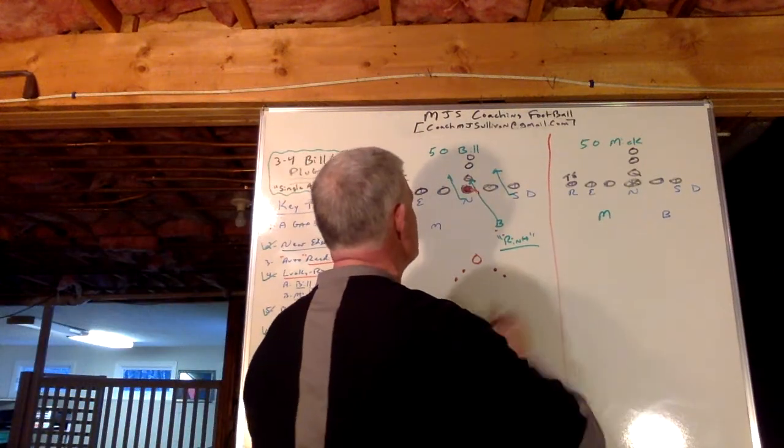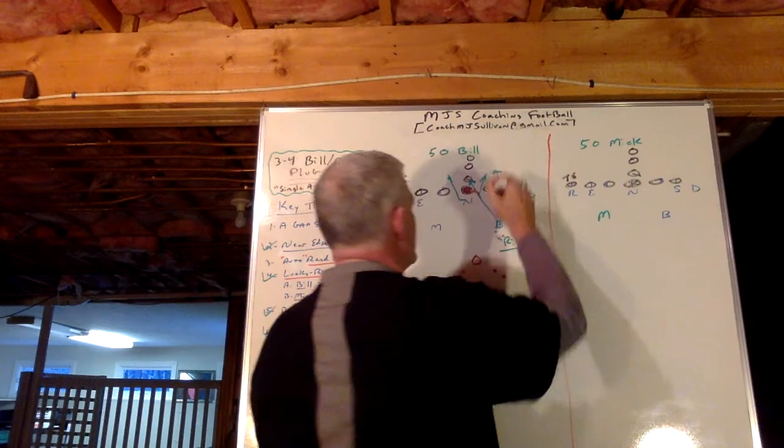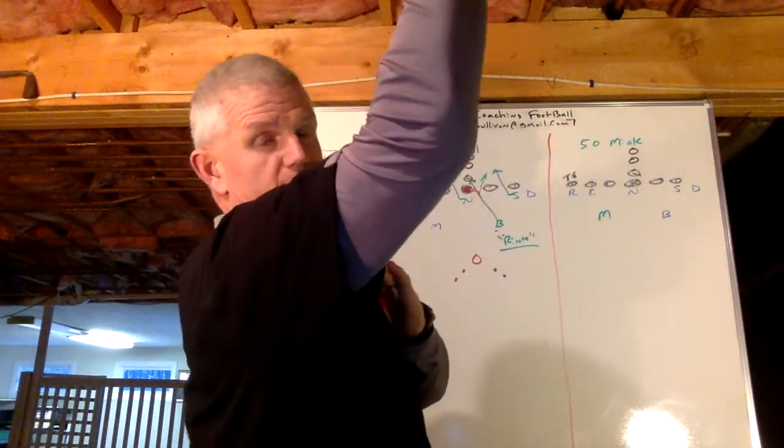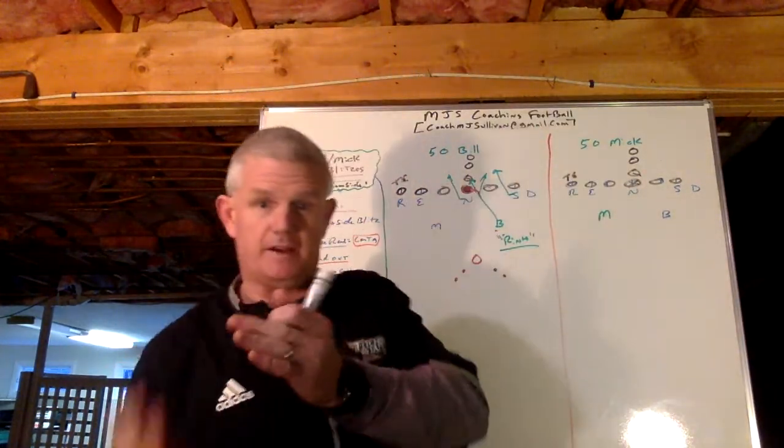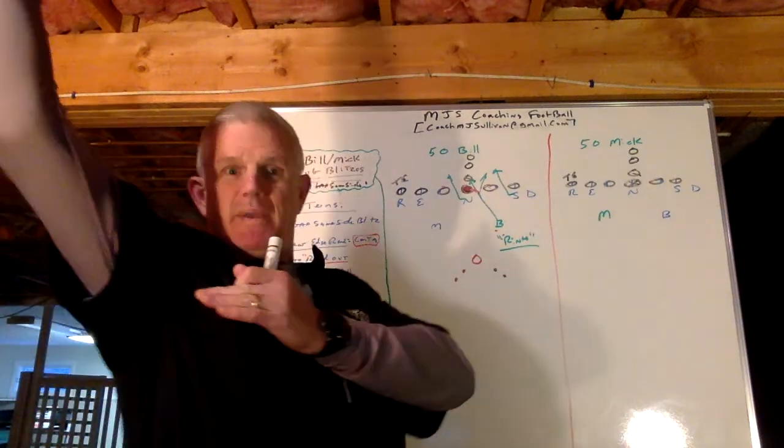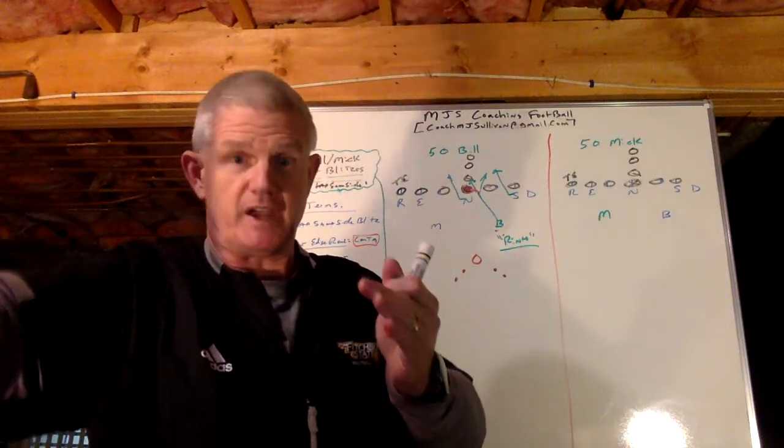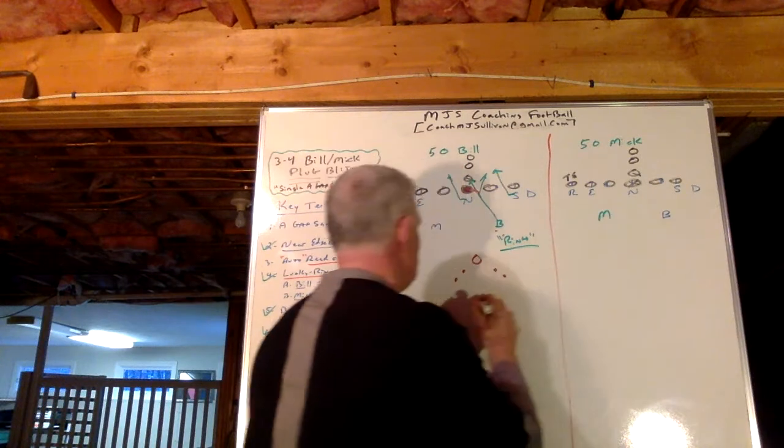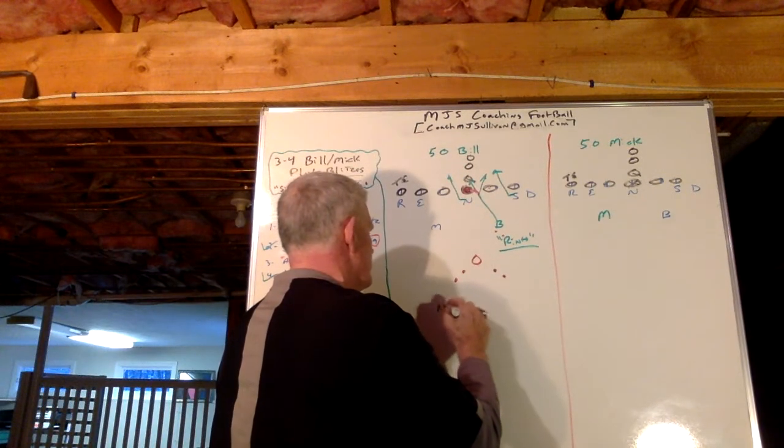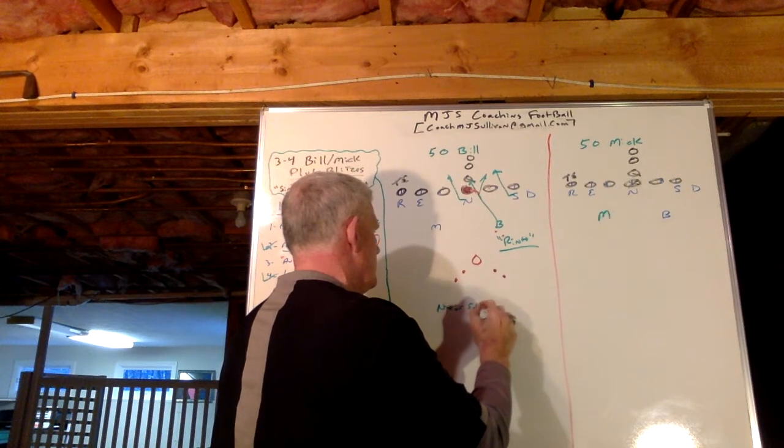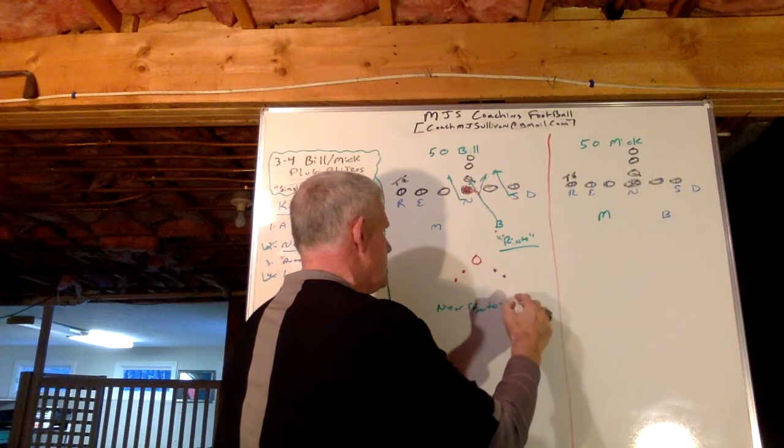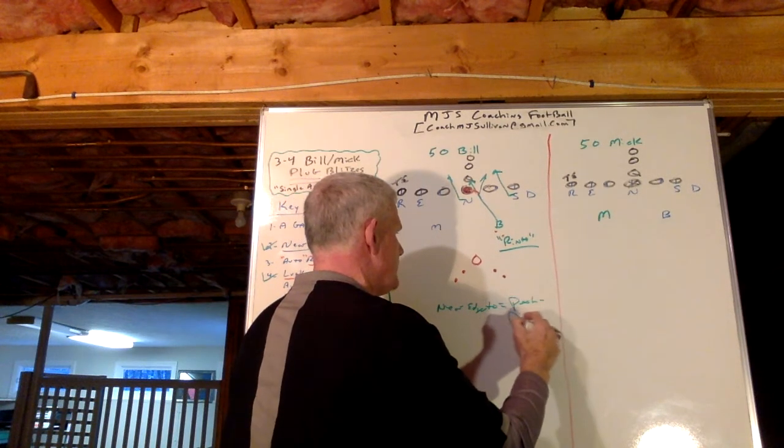So, near edge to you, you're going to peel. You know, penetrate. Peel. That means you play side. Near edge to you, peel and penetrate. That means you play side. Right? So, near edge two equals peel and penetrate. Your play side.